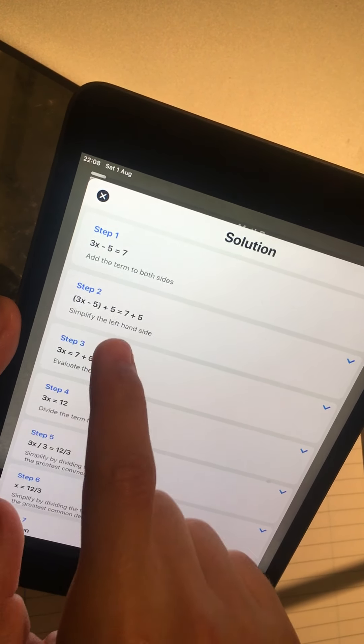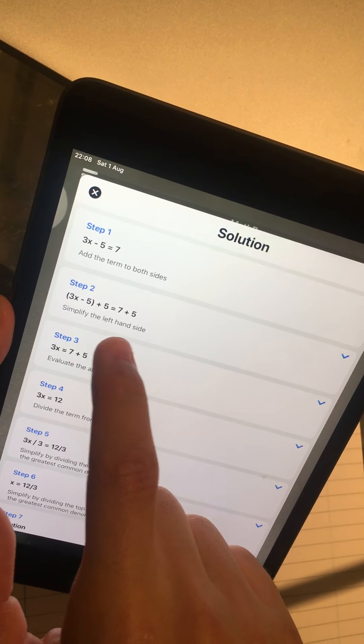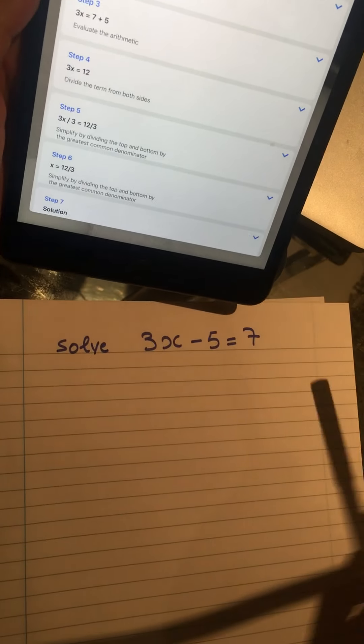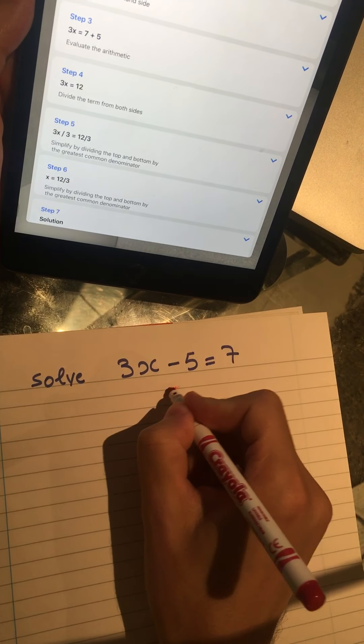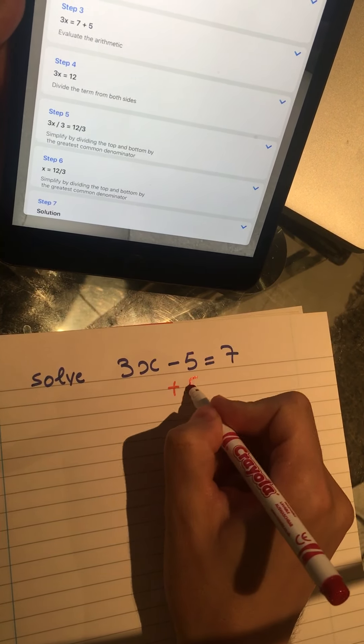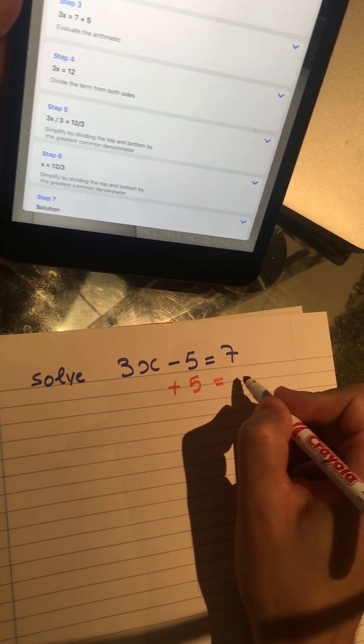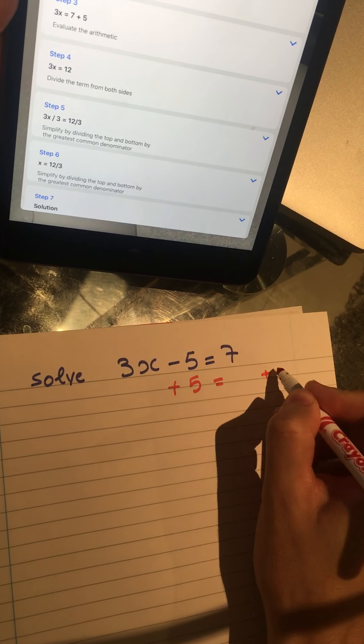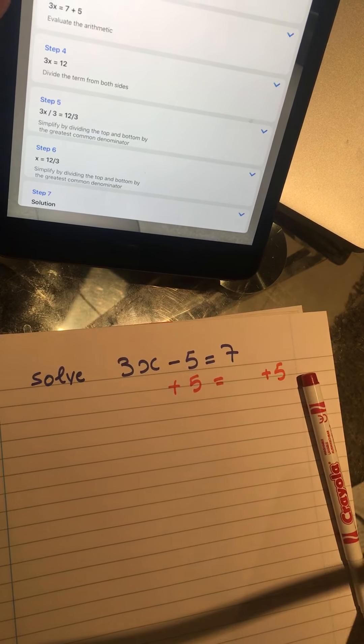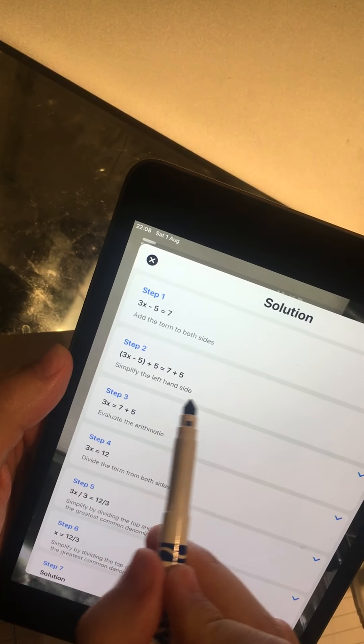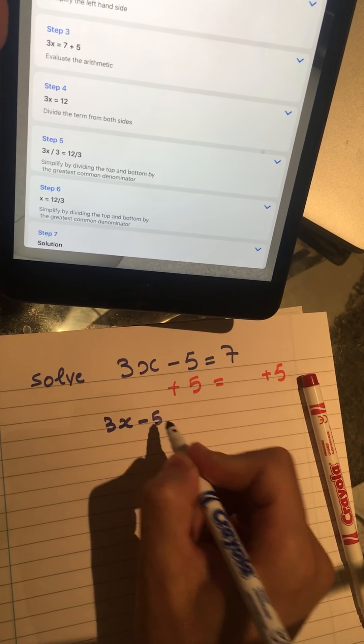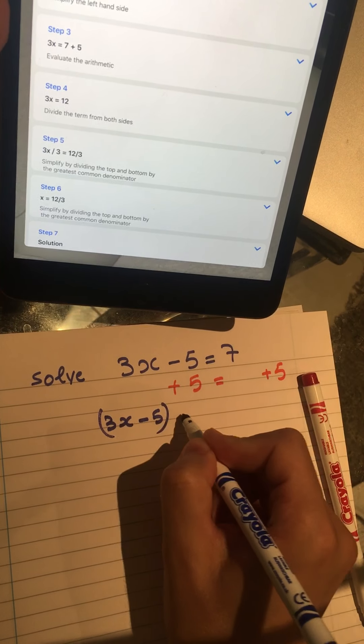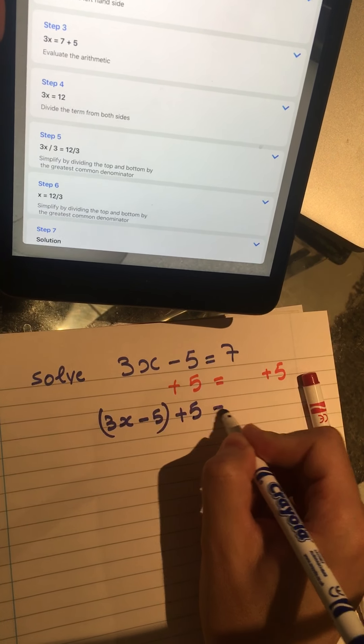It's adding number 5 to both sides, so let's do that. Here we will add plus 5, and the other side we will add plus 5. Basically, our solution will be 3x minus 5 plus 5 equals 7 plus 5. I'm adding 5 on both sides.